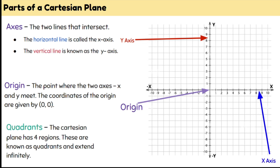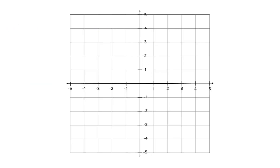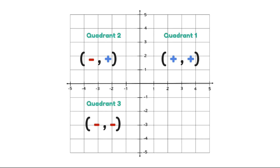There are four quadrants in our Cartesian plane, which are four regions. Quadrant 1 is what we've been dealing with, and it goes around anti-clockwise until we get to Quadrant 4. Quadrant 1 deals with positive numbers on both the x-axis and y-axis. Quadrant 2 deals with negative on the x-axis and positive on the y. Quadrant 3 deals with only negative numbers. And Quadrant 4 deals with positive numbers on the x-axis and negative numbers on the y-axis.